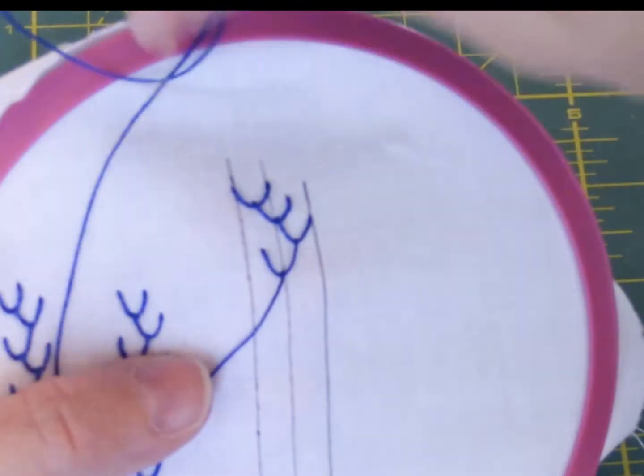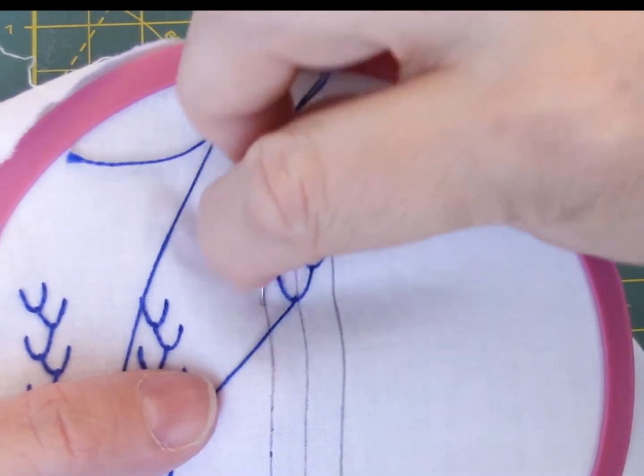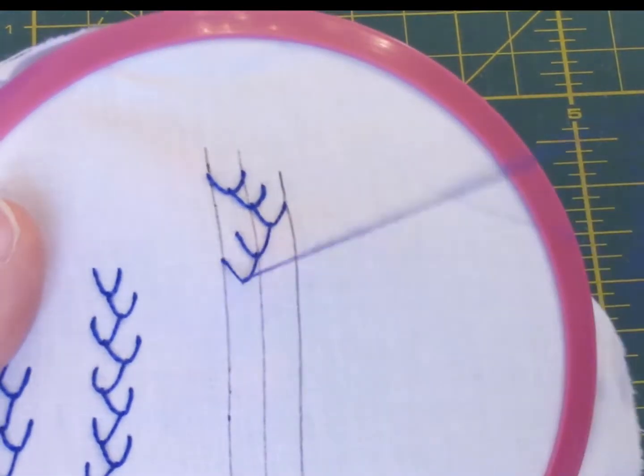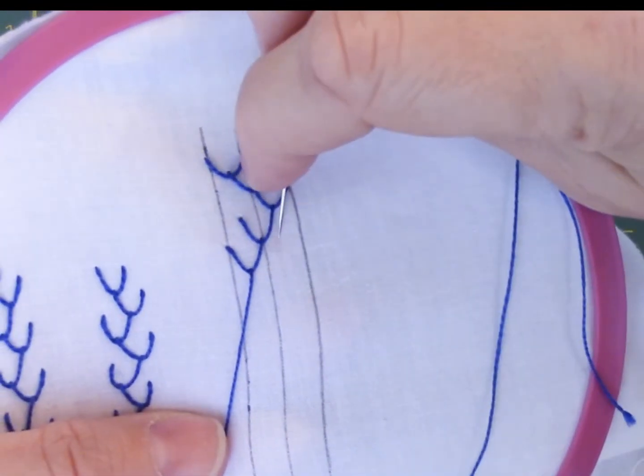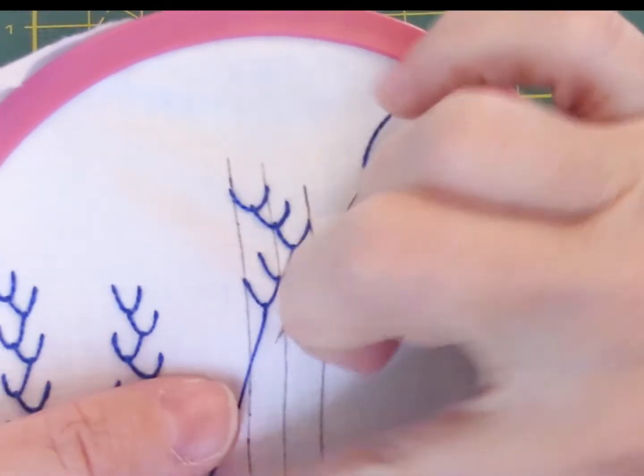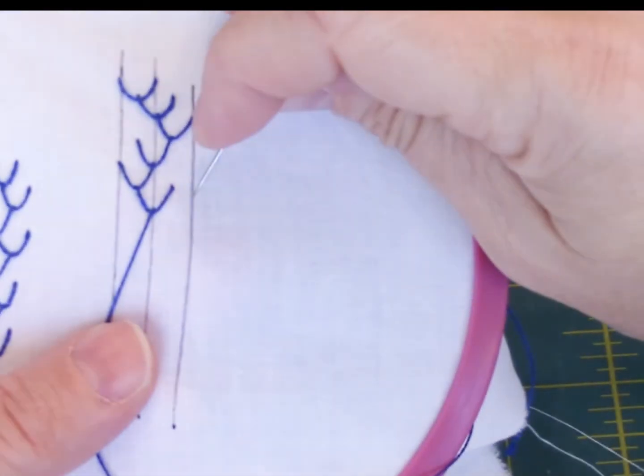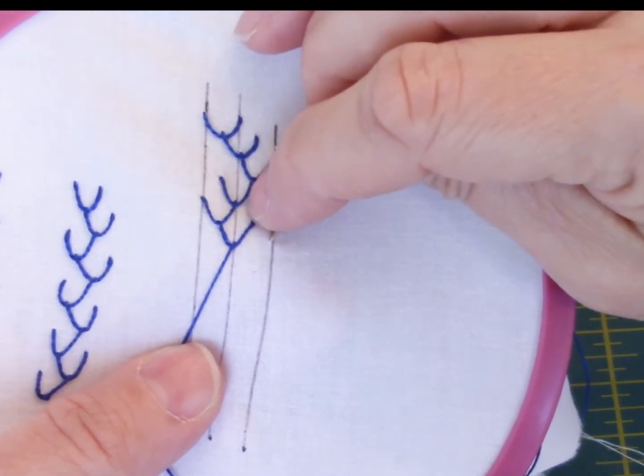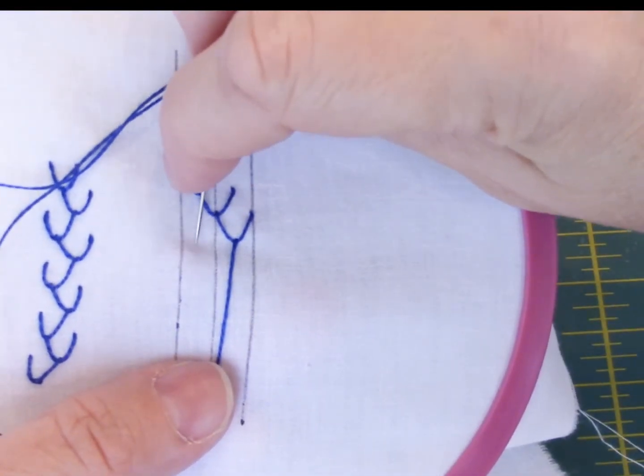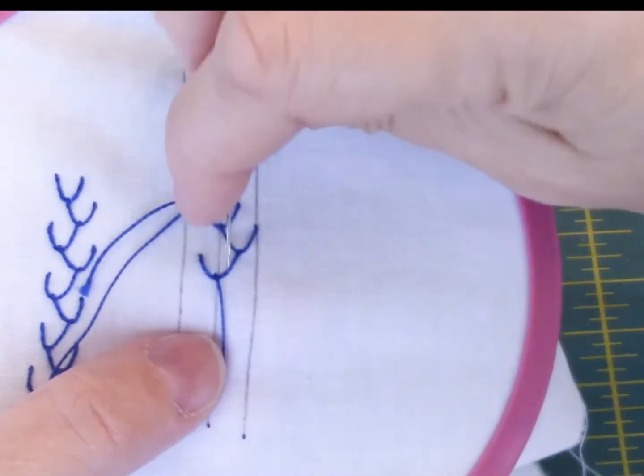Then I'm going to come over, go down on this outside line, and it should be parallel to where I came up here. Go down, up between the lines. And parallel to that stitch, I'm going down between the lines, up on the middle line. Down on the outside line, up between them. So I just keep working back and forth between the lines when I do this.